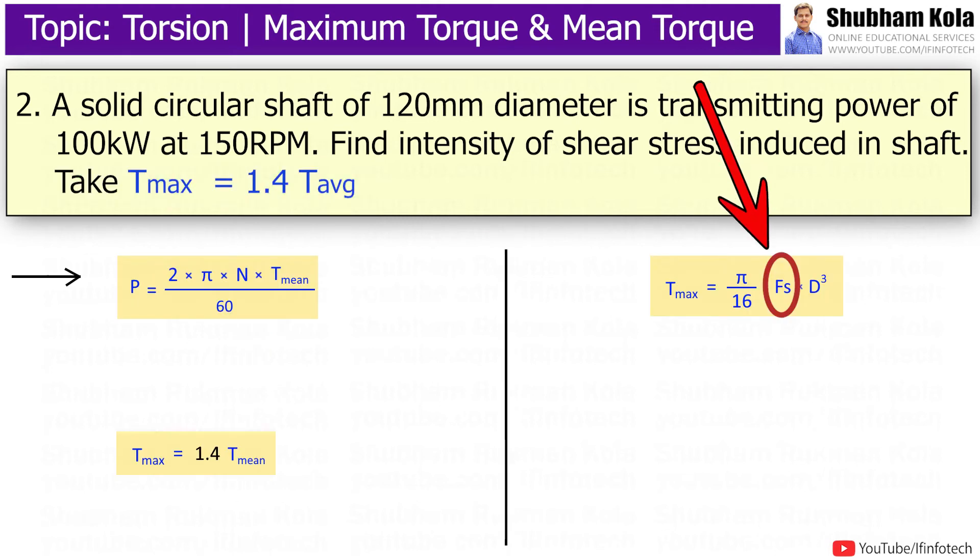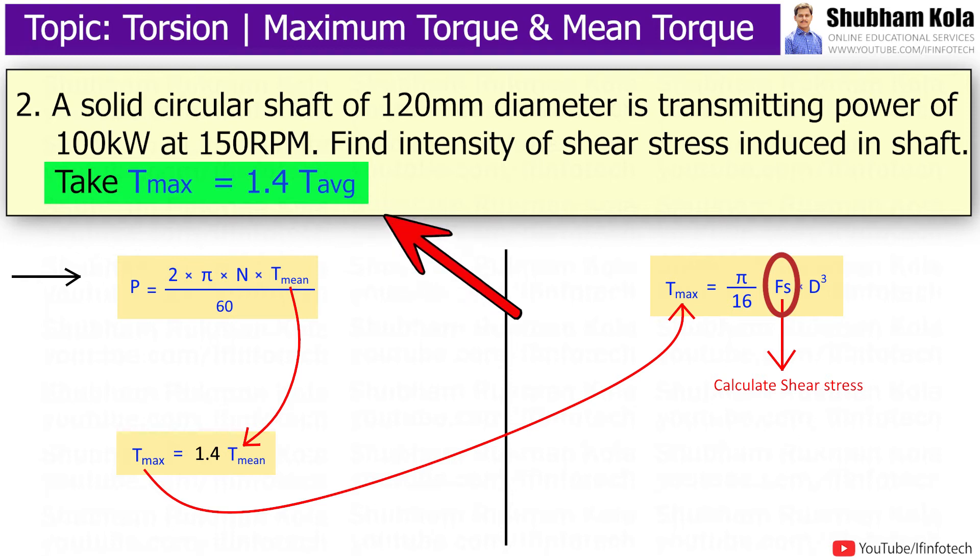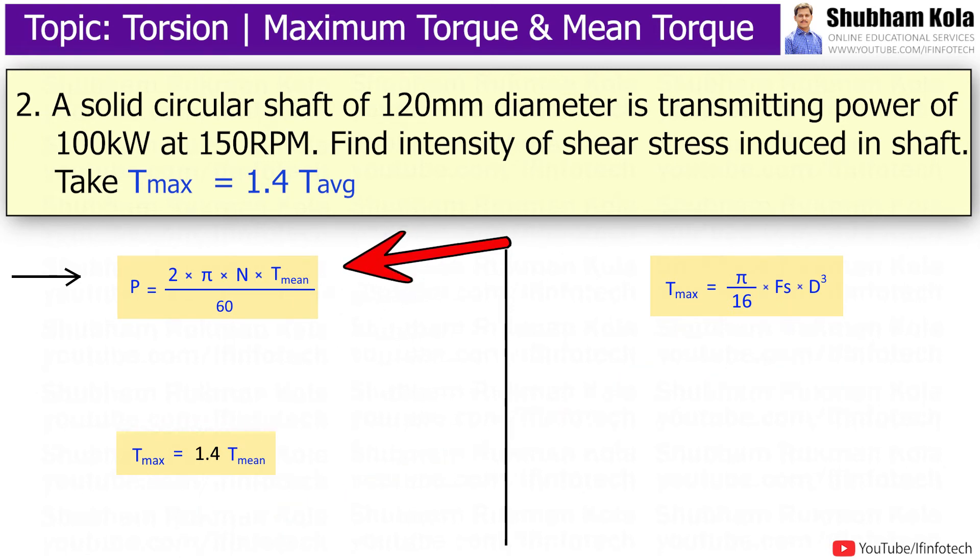To calculate intensity of shear stress, we need to have the value of maximum torque. And in problem, the relation between maximum torque and average torque is given. And to calculate mean torque, we have the formula of power: P = 2πNT_min/60. Here, power is 100×10³ and speed is 150rpm.